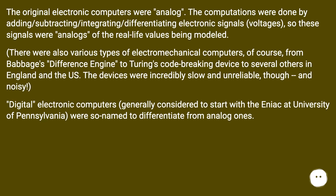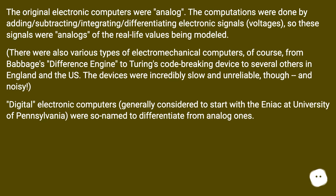There were also various types of electromechanical computers, from Babbage's difference engine to Turing's code-breaking device to several others in England and the US. These devices were incredibly slow, unreliable, and noisy. Digital electronic computers, generally considered to start with the ENIAC at the University of Pennsylvania, were so named to differentiate them from analog ones.